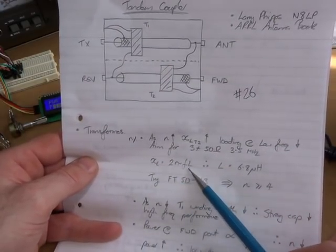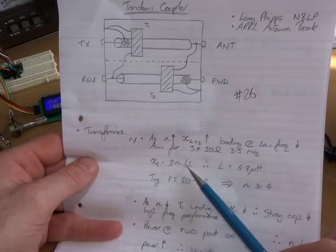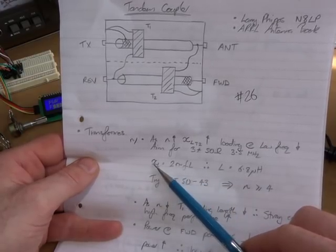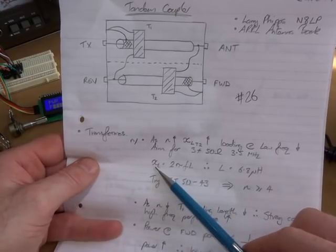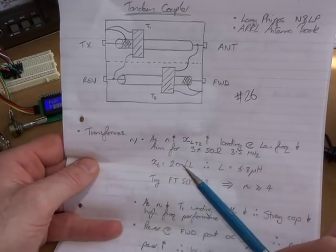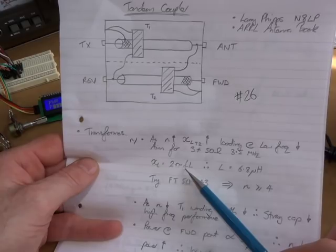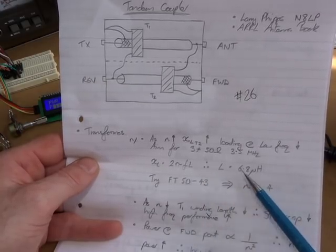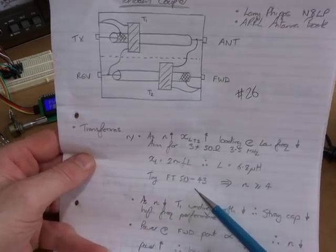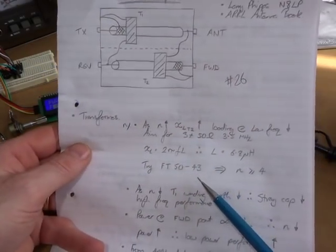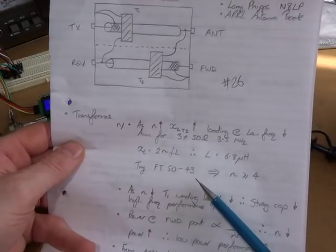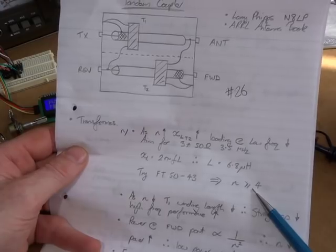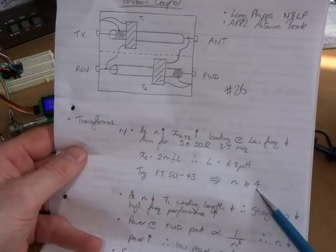For me, the lowest frequency of operation is the 80 meter band or 3.5 megahertz. So XL equals 2πfL, and L is the unknown. We're solving for an L given that it's got to be at least 150 ohms at 3.5 megahertz. It gives us an inductance of 6.8 microhenries. I've elected to use an FT50-43, which gives me a turns ratio of no less than n equals 4.